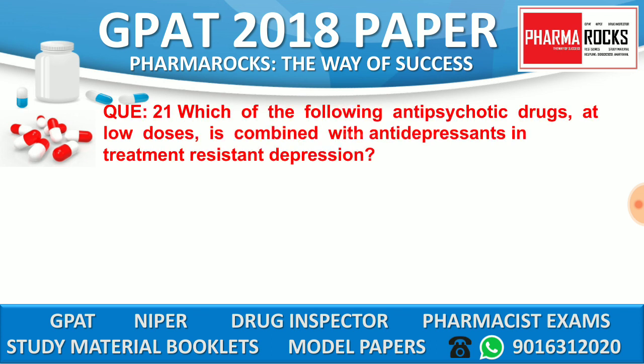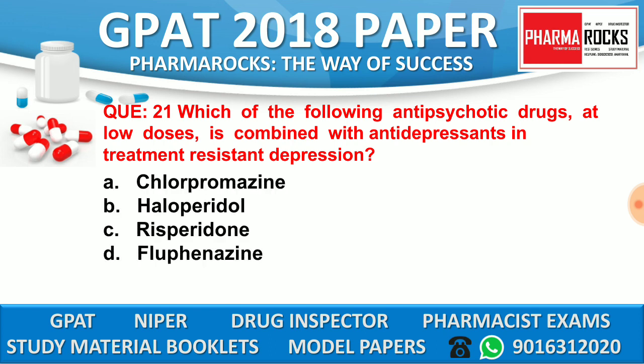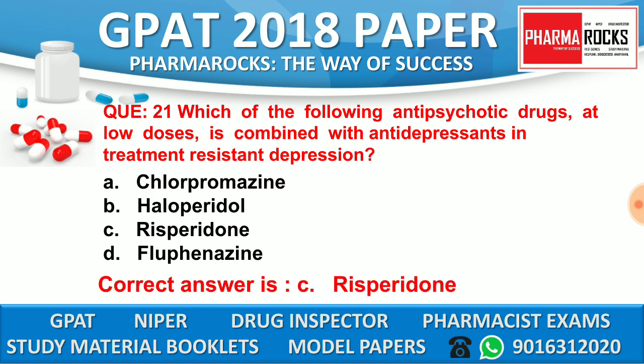Question number 21: Which of the following antipsychotic drugs at low dose is combined with antidepressant in the treatment of resistant depression? Option A: Chlorpromazine. Option B: Haloperidol. Option C: Risperidone. Option D: Fluphenazine. The correct answer is option C, Risperidone.